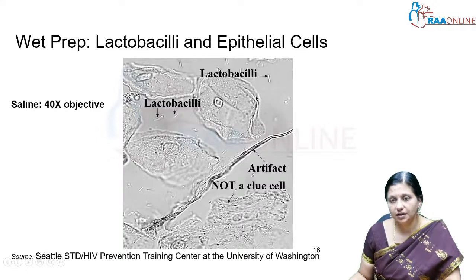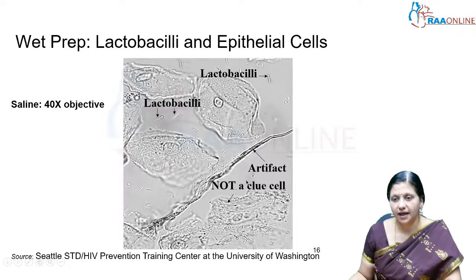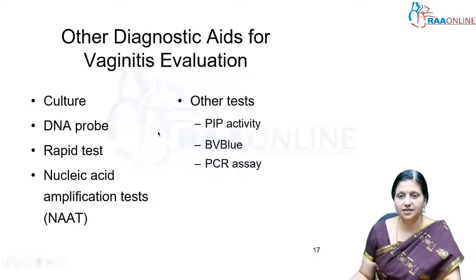Looking at the normal appearance, lactobacilli look like organisms hanging under a rock. At 40x objective magnification, lactobacilli are rod-shaped bacteria. These are normal epithelial vaginal cells — not clue cells — and this is the lactobacilli surrounding the normal vaginal cell.